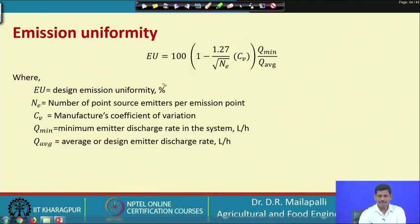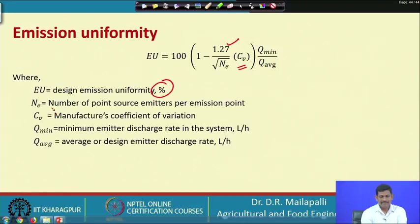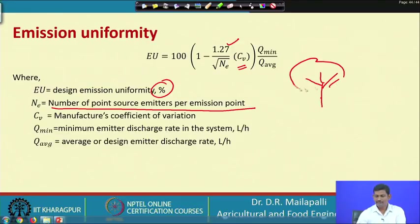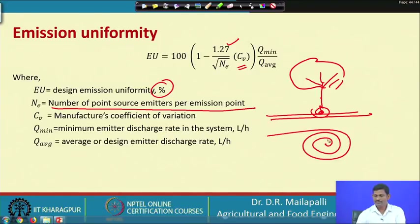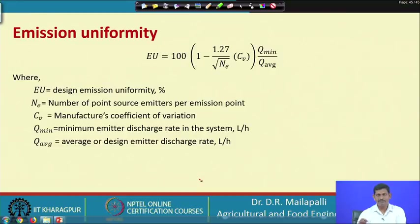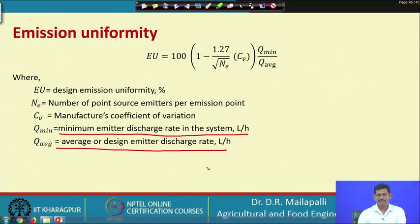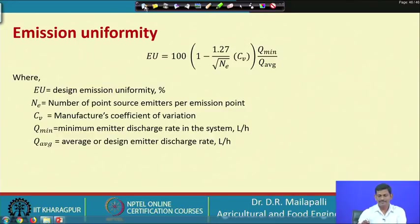The emission uniformity EU = 100 × [1 − (1.27 / √NA) × CV] × (Qmin / Qaverage), expressed as a percentage. NA is the number of point source emitters per emission point — for example, a tree may have multiple emitters at one emission spot to get the desired discharge. Using this equation you can estimate emission uniformity for a particular spot and similarly for the entire system.